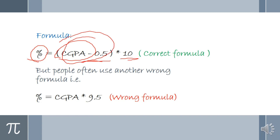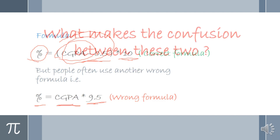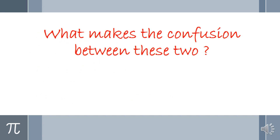You will get your percentage. But people often use another wrong formula, where percentage is equal to CGPA multiplied by 9.5, and they get a percentage. But which one is not the correct percentage? So what makes the confusion between these two formulas?